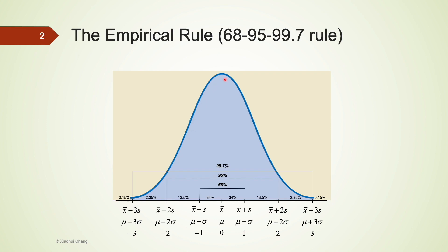If the data are normal, we can draw a bell curve to represent the observations. Right at the center is where the averages are. If we convert those numbers in terms of a relative measure of standing, the z-score at the center is zero. To the right are positive z-scores, and to the left are negative z-scores.